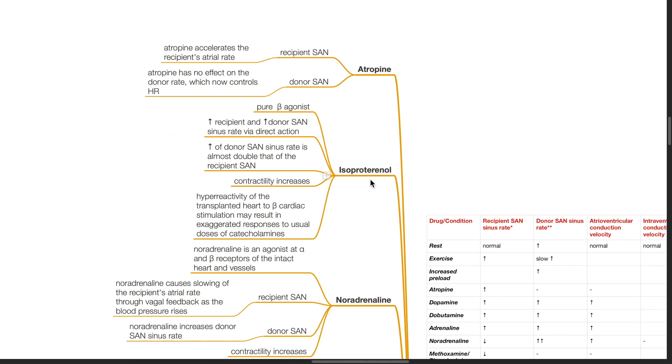Isoproterenol is a pure beta agonist. It increases the recipient and donor sinus rate via direct action. Increase of the donor sinus rate is almost double that of the recipient's sinus rate. Contractility increases.